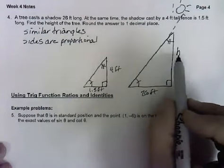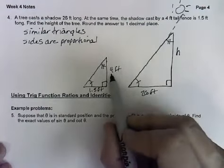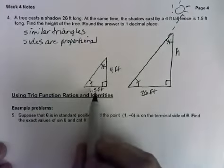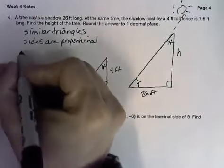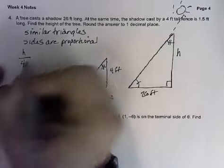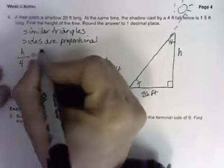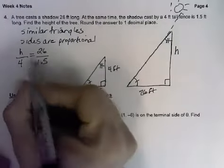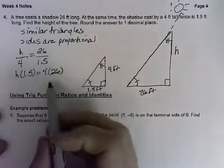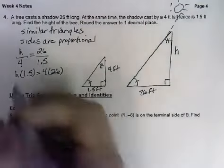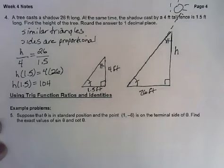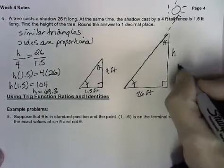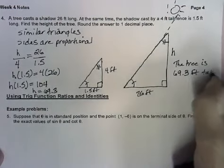We can set up a proportion between this side h and the height of the fence. And that should equal the length of this shadow divided by the length of this shadow. One way we could set up this equation would be h over 4 equals 26 over 1.5. Then we want to solve that equation for h. We can cross multiply. That gives us h times 1.5 equals 4 times 26. And if we solve this for h, we end up with 69.3. So our final answer is that the tree is 69.3 feet tall.